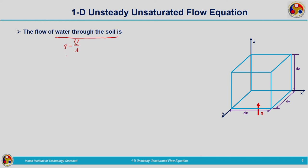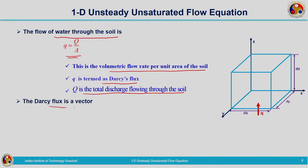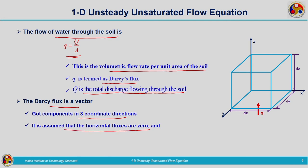When we consider flow of water through the soil, at the bottom face a flux of Q is entering the control volume. This Q can be written as Q divided by A, which we have already seen — that is the volumetric flow rate per unit area of the soil — small q, that is the Darcy's flux. Capital Q is the actual discharge flowing through the soil. This Darcy's flux is a vector; here we are considering only one dimension. It is assumed that the horizontal fluxes are zero, and only the vertical component of the Darcy's flux is considered.